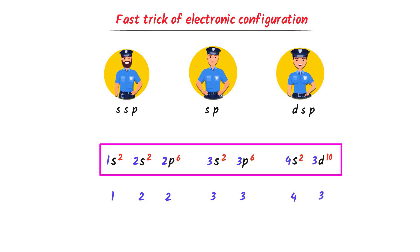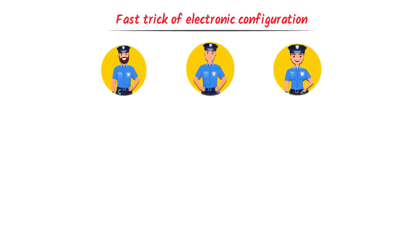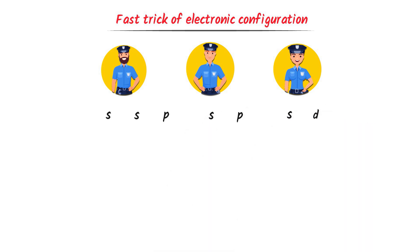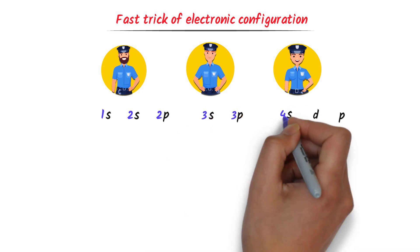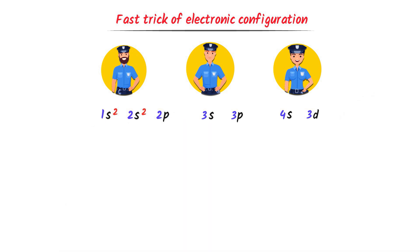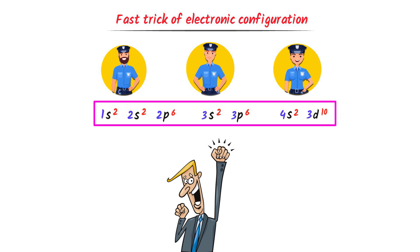Let me show you how fast I use this trick. SSP, SP, then D with S before it and P after it. Numbers: 1, 22, 33, 43. The last P has no number — cancel it. Fill in: 2 electrons, 2 electrons, 2 electrons, 2 electrons, 2 electrons for the S orbitals; 6 electrons, 6 electrons for P orbitals; and 10 electrons for D. Using this trick, we can super-fastly write electronic configuration of the first 30 elements.